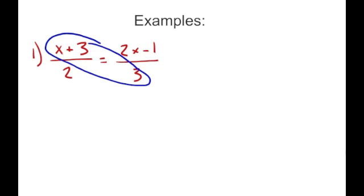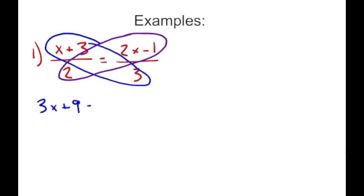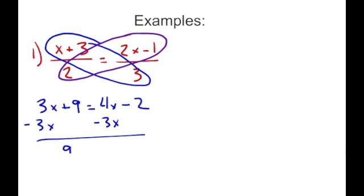We're going to start with doing our cross products. So this is 3 times the quantity (3x plus 3), which using the distributive property becomes 9x plus 9. Wait — that's 3 times (3x plus 3) equals 9x plus 9. And then 2 times the quantity (2x minus 1), using the distributive property, is 4x minus 2. Then we solve for x: subtracting 3x gives 9 equals x minus 2. Adding 2 to each side, x equals 11.